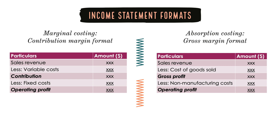This fixed cost can be manufacturing or non-manufacturing in nature. So in a way, the income statement is split into two parts: one part covering the variable costs and the other part covering the fixed costs. So the income statement is split on the basis of variable and fixed costs in marginal costing.